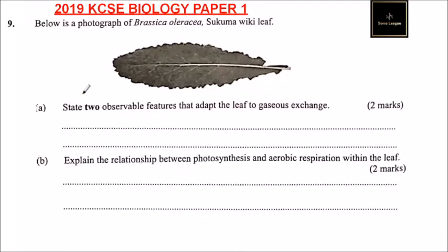Question number nine: below is a photograph of Brassica, or the skumawiki leaf. We have the diagram of the skumawiki leaf. Part A: state two observable features that adapt the leaf to gaseous exchange.